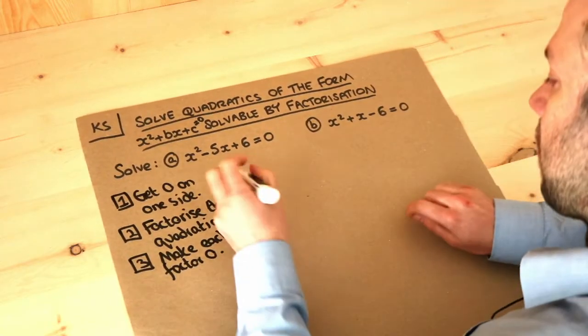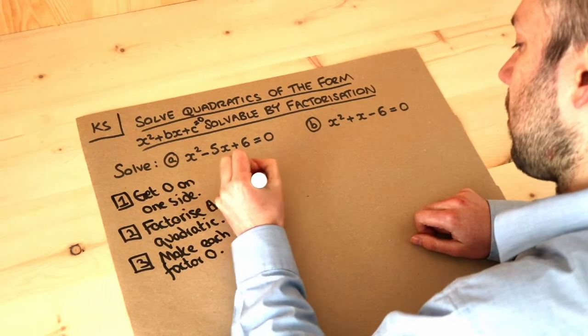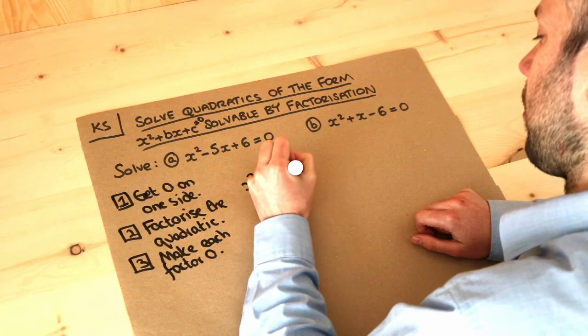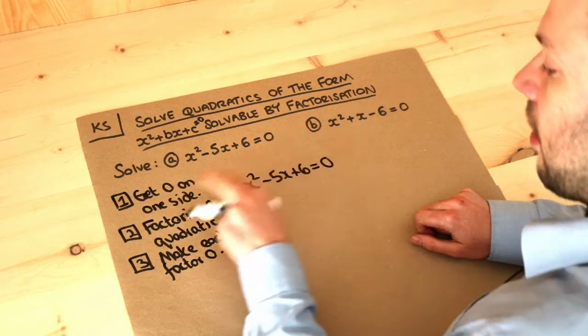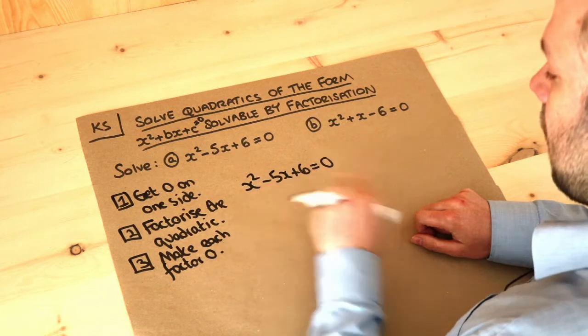So let's do that for this first one. We've got x squared minus five x plus six equals zero. Now we've already got zero on one side, so we now need to factorize this left hand side.